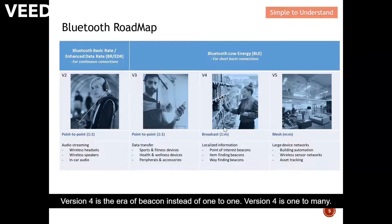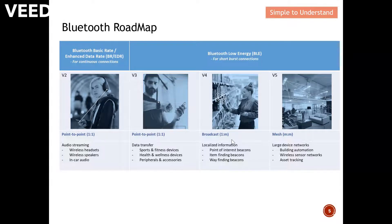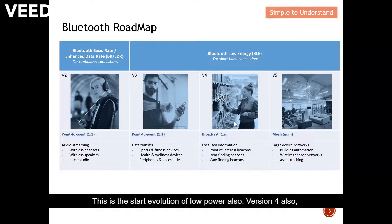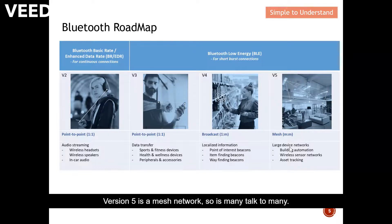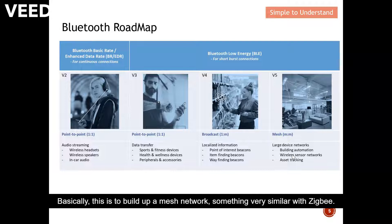Instead of one-to-one, version 4 is one-to-many, marking the start of the beacon evolution and a drastic reduction in power. Version 5 is a mesh network — many talking to many — something very similar to Zigbee, used to build out a full mesh network.